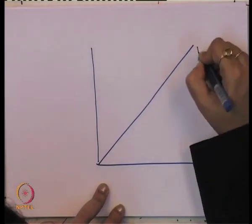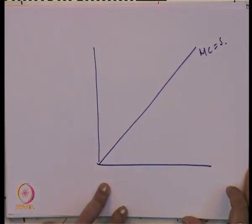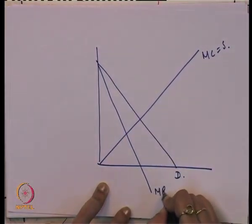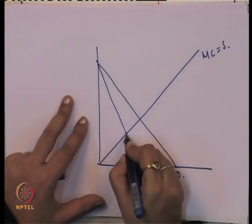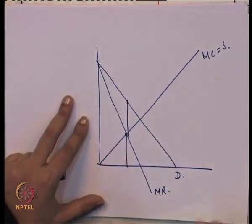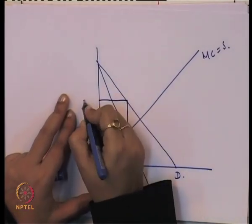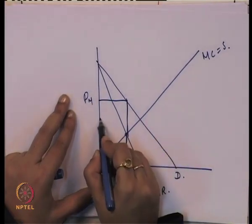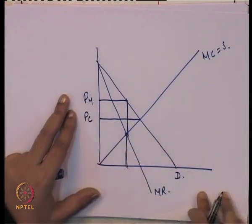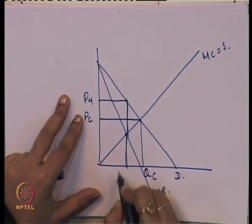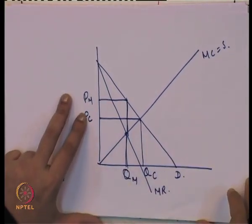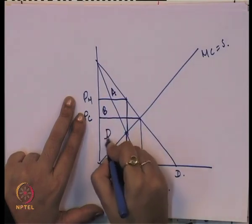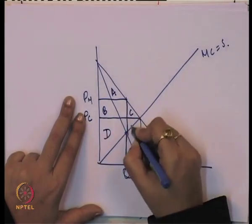In this case, marginal cost equals supply, and here we get the demand curve and the marginal revenue curve. On the basis of marginal revenue and marginal cost, we get the monopoly price. On the basis of demand and supply, we get the competitive price. The competitive output and monopoly output are identified. We label the areas as A, B, C, D, and E.